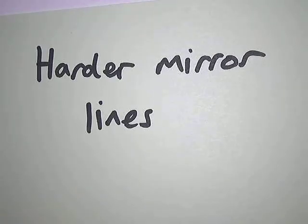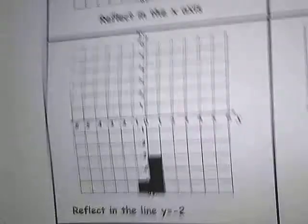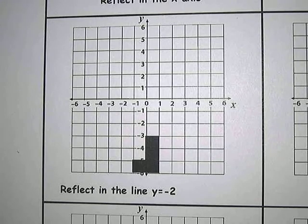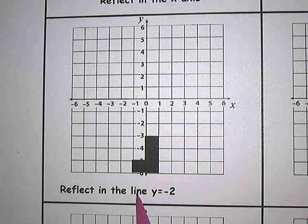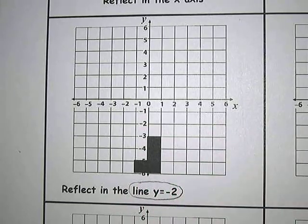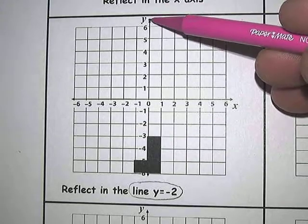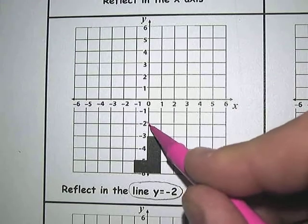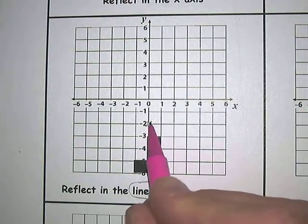But what if you have harder mirror lines. What do you do then? Well, let me give you some examples. Here's a harder one. We're going to reflect this shape in the line y equals 2. So, first of all, we've got to find where this line is. Now the line y equals 2 is very easy to find, as long as you listen carefully. You find the y-axis. You go down to minus 2, which is there.